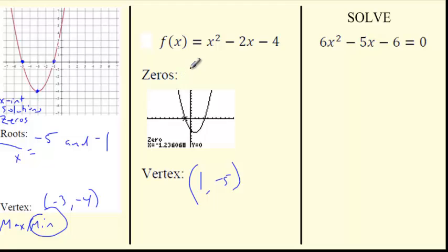Zeros, don't write them like coordinates. It's x equals negative 1.24. And then you've got to find the other one, which would be over here. Do the same left bound, right bound. So nothing to do with up or down. It's always left or right. Awesome.